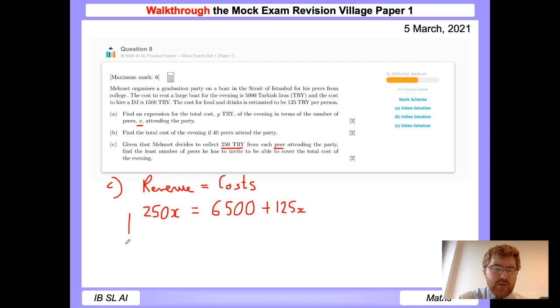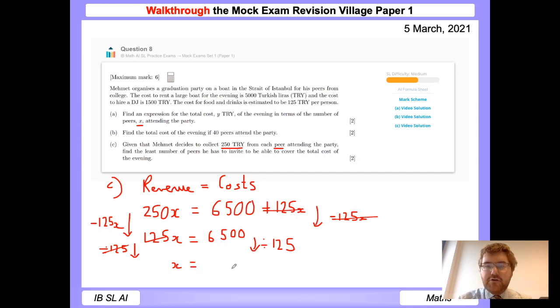The costs was the function that we looked at last time. So our function from last time was 6,500 plus 125x. And at this stage here, we've now got a straightforward equation to solve. You could use your end solve function on your calculator. This will then generate the answer for you. But let's do this old school. So we want all the x's on one side. So what's the opposite of 125x? We're going to minus 125x on both sides. So this cancels with this. 250x minus 125x is 125x equals 6,500. And now what's the opposite of timesing by 125? We're going to divide by 125 on both sides of our equation.